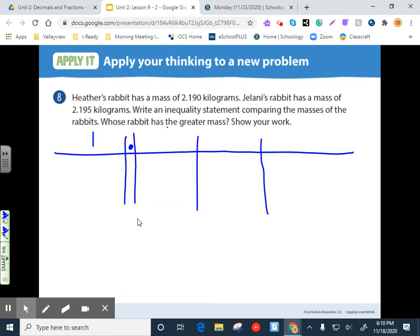Do this one again. Just showing you the different ways. Here's our ones place, our tenths, our hundredths, and our thousandths place. Okay. So H for Heather. Her rabbit is two and nineteen hundredths. Now they have the zero here for the thousandths place. Put that in there for comparison's sake. Jelani's rabbit is two and one hundred ninety five thousandths. And now you see why they snuck that zero in there like that.